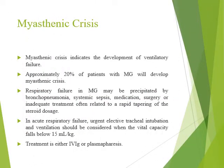Myasthenic crisis indicates the development of ventilatory failure when muscle weakness affects the respiratory muscles — the patient should be admitted to the ICU. This may happen in 20% of patients. Respiratory failure may be precipitated by pneumonia, infection, drugs, surgery, inadequate treatment, rapid lowering of steroids, or administration of enema. In acute respiratory failure, urgent tracheal intubation and ventilation should be considered when vital capacity is below 15 mL/kg; IV immunoglobulin or plasma pheresis should be started immediately.